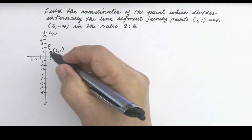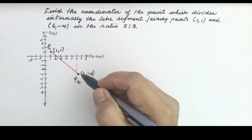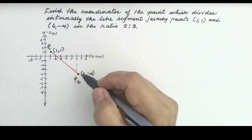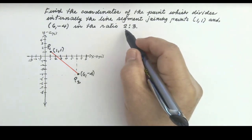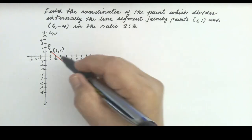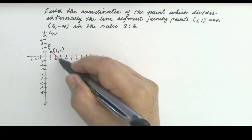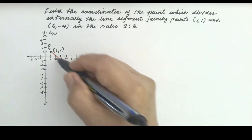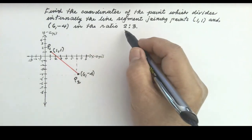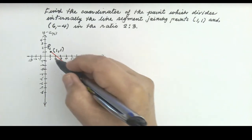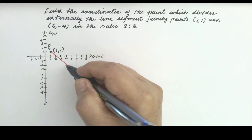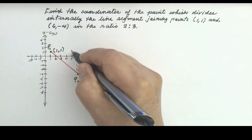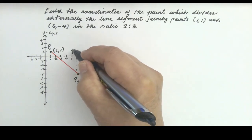We are asked to divide the segment internally in the ratio 2 is to 3. The point that will divide this segment in this ratio is somewhere on the segment. We don't know exactly where — let us call that point P.